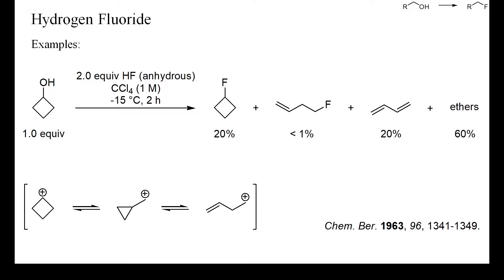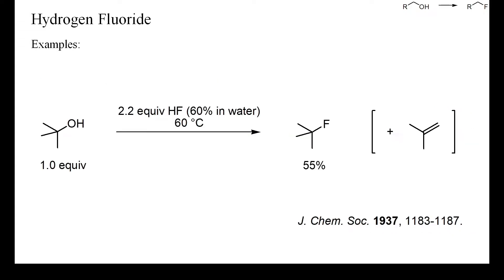The cyclobutyl cation readily rearranges into cyclopropylmethyl and allyl cations, and some of the byproducts observed resulted from these rearranged cations. Tert-butanol, however, can be converted into tert-butyl fluoride; nevertheless, the yield attained in this older article was only 55%. Despite the excess of hydrogen fluoride, some of the starting alcohol underwent elimination to isobutylene and probably also oligomerization.